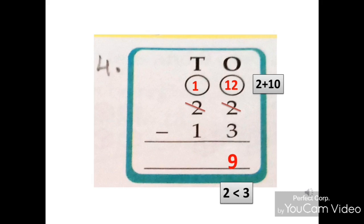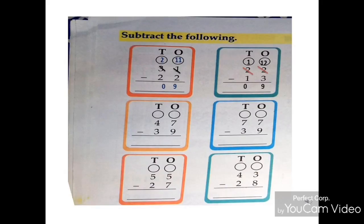Now subtract the 10's column. Numbers are 1 minus 1 which is equal to 0. Write 0 under 10's column. The difference of 22 and 13 is 9.